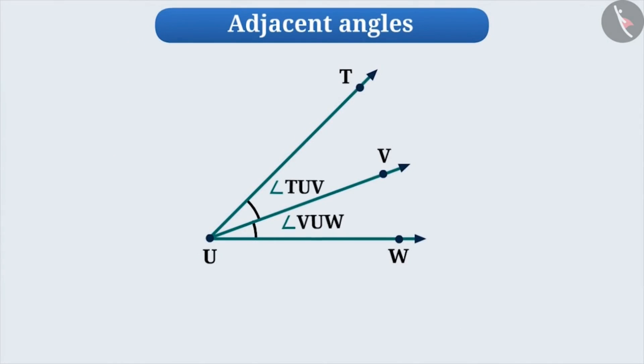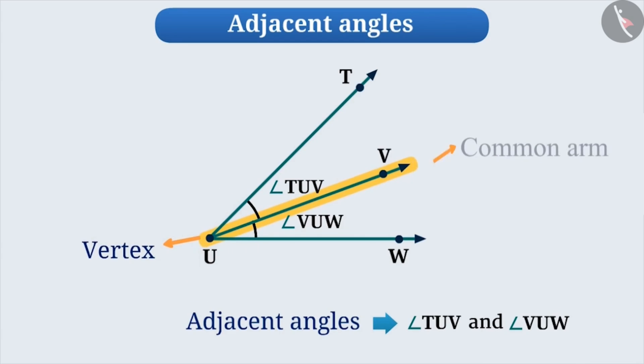In the previous video, we learned that a pair of angles are called adjacent angles when they have a common vertex and they have a common arm.